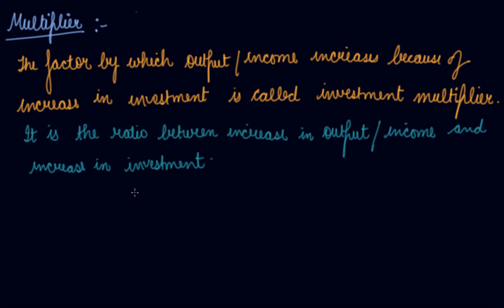So K is equal to the change in income divided by the change in investment, where K denotes the multiplier.